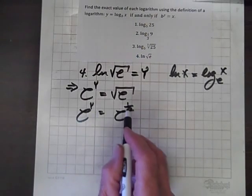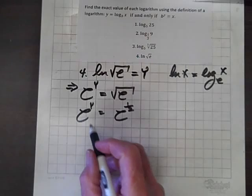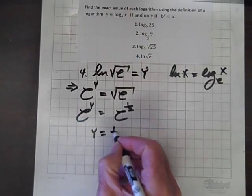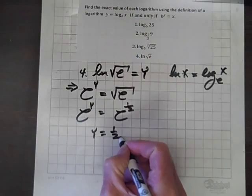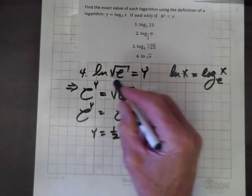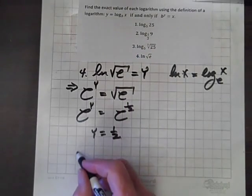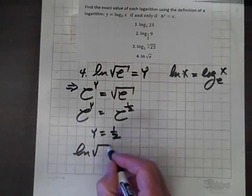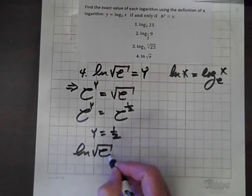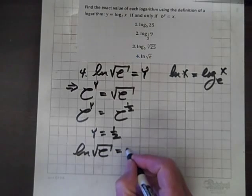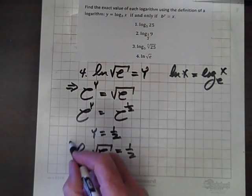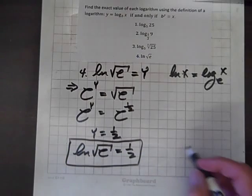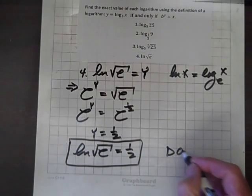Now, equating exponents, since the bases are identical, we have y equals 1/2. But y also equals ln of the square root of e. So ln of the square root of e equals 1/2. And we've simplified our final expression, and we are done.